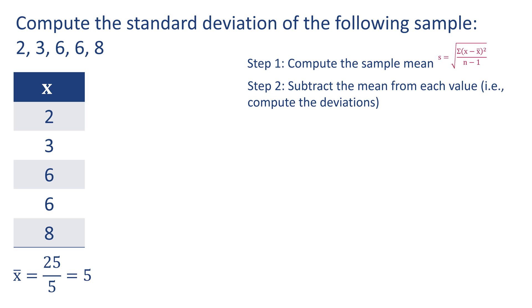Step 2: subtract the mean from each value. In other words, compute the deviations. I'll add a second column here. We'll take each value from the first column and we'll subtract the sample mean, which was 5.